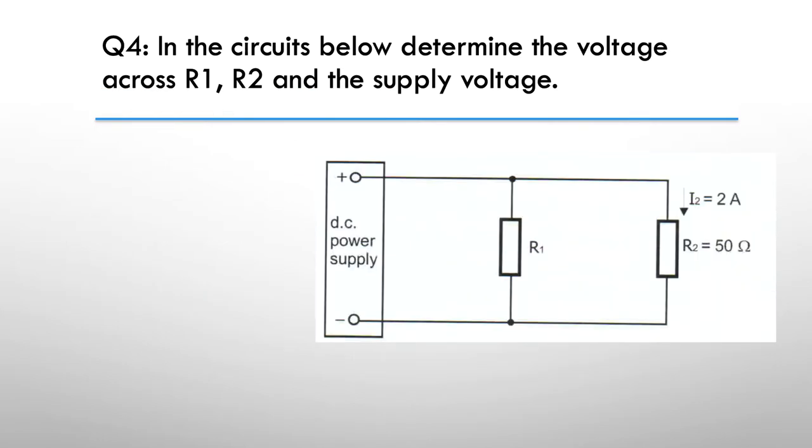Question four, in the circuit below determine the voltage across R1, R2, and the supply voltage. So pause here. Here's your hint, it's all the same thing, everything's in parallel, it's all the same. Don't be tricked by the way the question's asked about the voltages, they're all the same. And here's the answer. Voltage is simply I2 multiplied by R2 equals 2 times 50, 100 volts. So V equals V1 equals V2, so all the voltages, the voltage across R1, the voltage across R2, and the supply or the applied voltage has to be 100 volts.